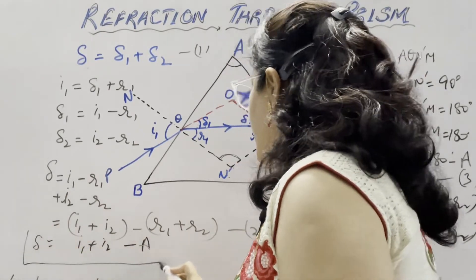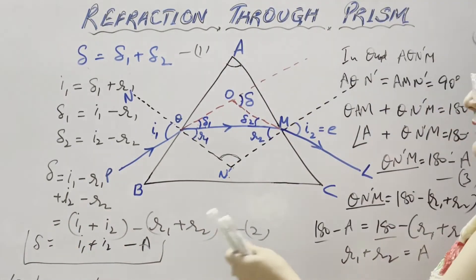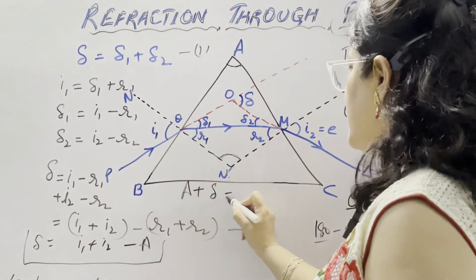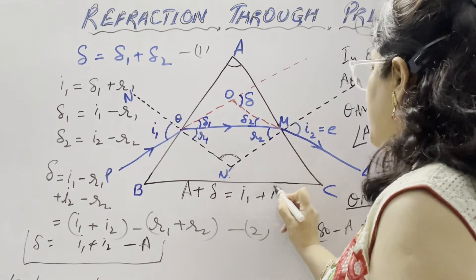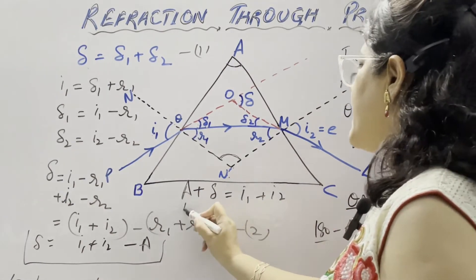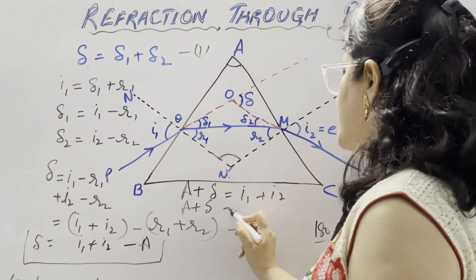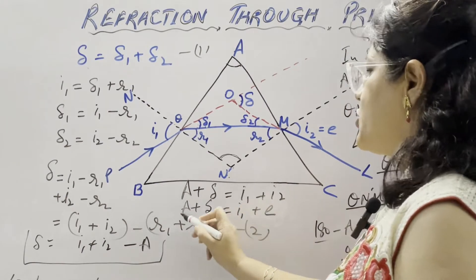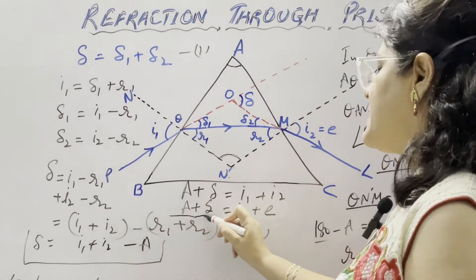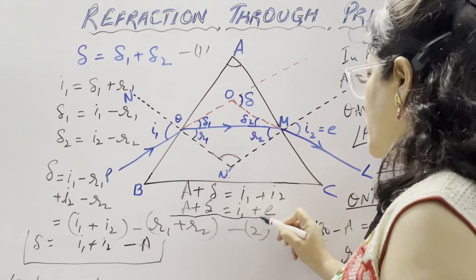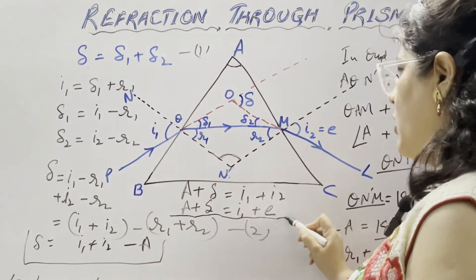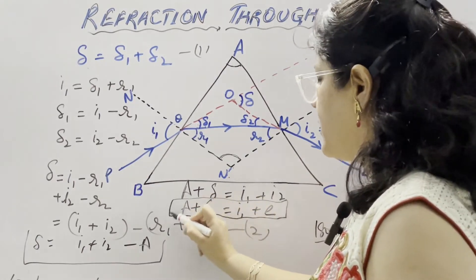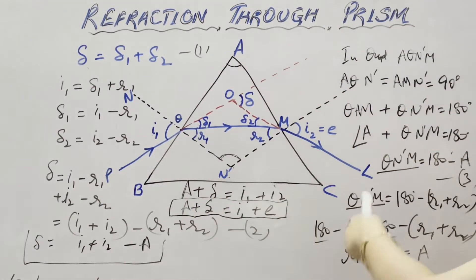So our equation gives delta equals i1 plus i2 minus A, which rearranges to the main relation: A plus delta equals i1 plus i2, or A plus delta equals i1 plus E. Overall: angle of prism plus angle of deviation equals angle of incidence plus angle of emergence. This is the relation between all four angles formed in the prism.